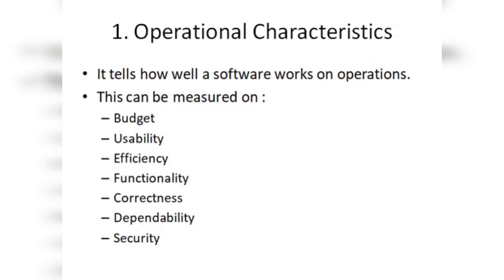Usability means whether it is user-friendly or not, whether it is very complex in design or not. All these characteristics help us judge whether a software is operationally good or not. Next is efficiency.